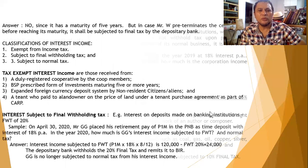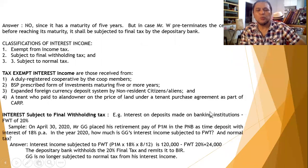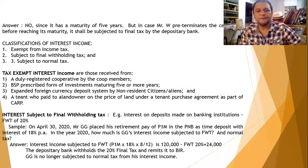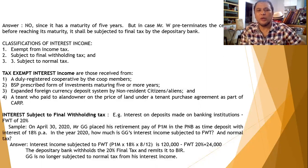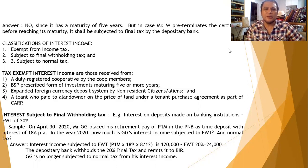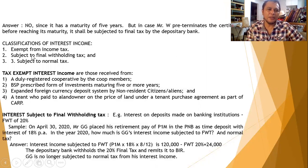Welcome to segment 2 of chapter 4, which is gross income. In this segment, we are going to discuss the different classifications of interest income. Interest income is classified into: number one, exempt from income tax; number two, subject to final withholding tax; and third, subject to normal tax.